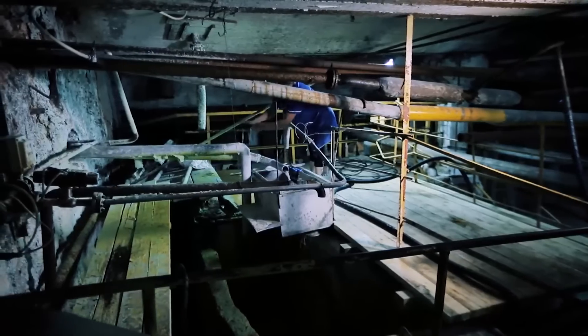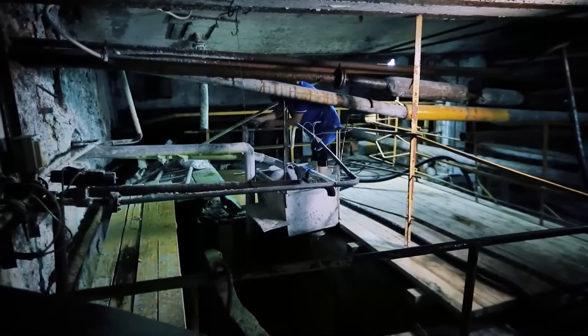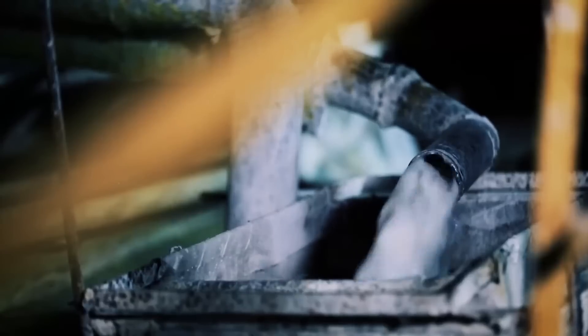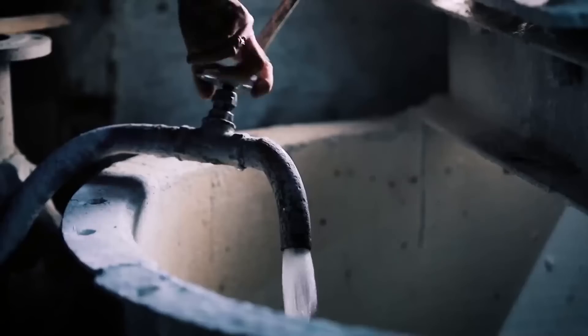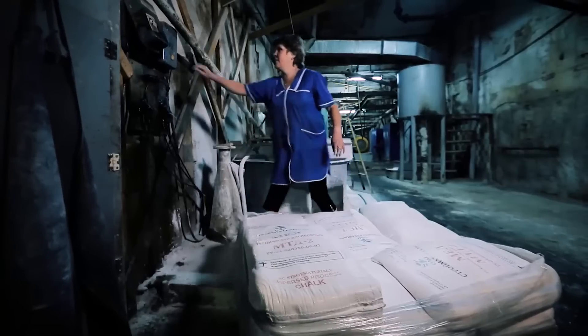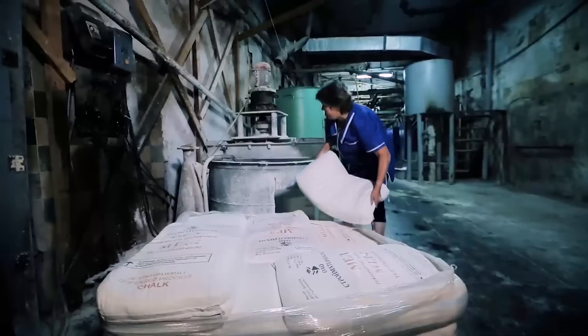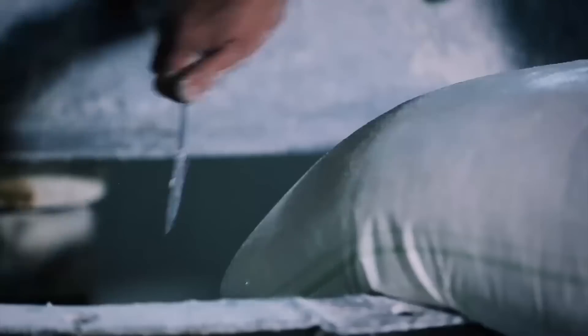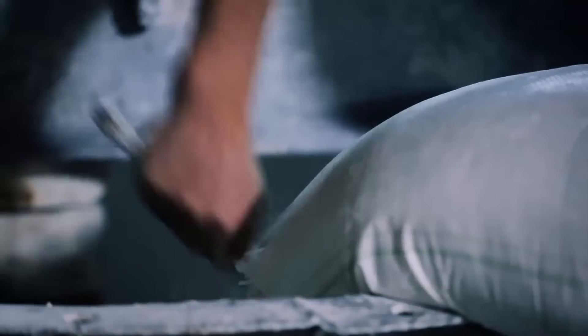The paper mass resembles porridge. To bind fibers together, factories use adhesive with a base of resin and rosin. It has a special substance which makes the paper strong and water repellent. To make it white and opaque, the pulp is filled with chalk.